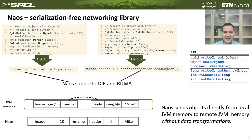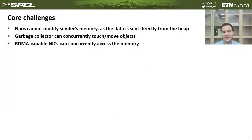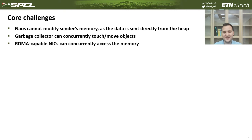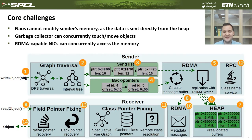However, we send the objects as they are stored in the local heap, which means we would send some fields that would be invalid on the receiving side — this is one of the core challenges of our project. Another challenge is related to garbage collection: the garbage collector can concurrently move objects while we are accessing them in the JVM. In addition, RDMA-capable devices can bypass the CPU and concurrently access the memory, which creates issues in the way we try to send the objects. We designed a series of algorithms, tricks, and approaches that allow us to safely and efficiently send objects between JVMs.